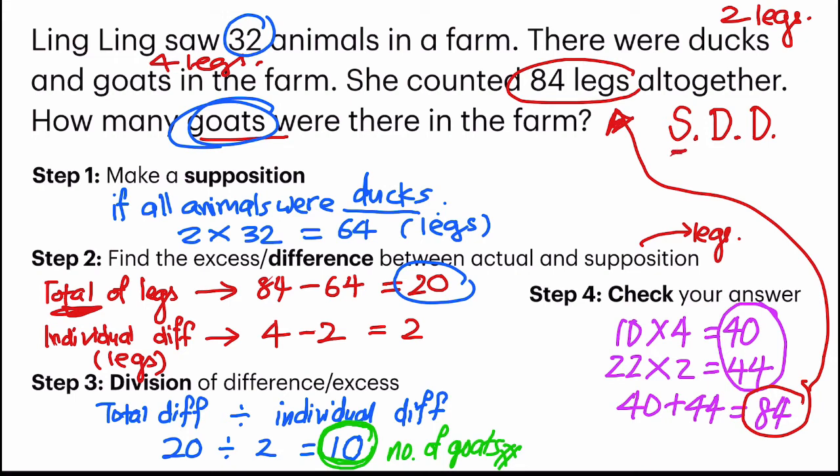So, the first one, letter S, is to make a supposition. The second letter, D, is to find the difference. And to find the difference, you have to find total difference, individual difference. The third, D, is to divide. Or division. And of course, the last step you can add in is C, to check. So, S, D, D, C.